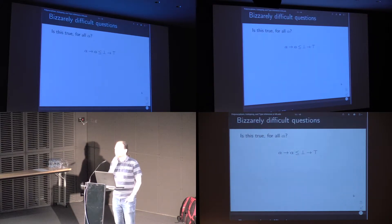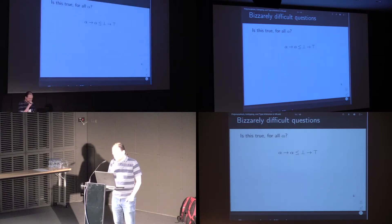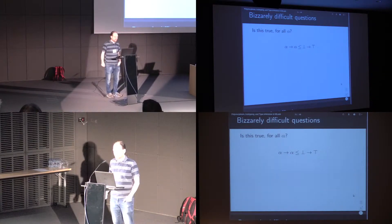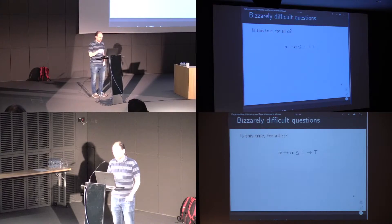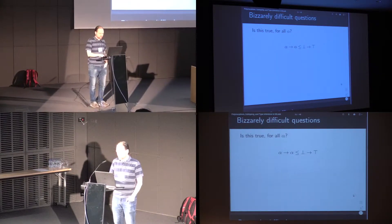However, this soon ran into trouble. So we next add variables by quantifying over the ground types, and then we ask simple subtyping questions of the sort that a compiler will be expected to answer. Is something like this true for all type alpha? This one is true for all alpha. We can decompose that with the subtyping rule for functions, and we see that alpha is always less than top, and bottom is always less than alpha.